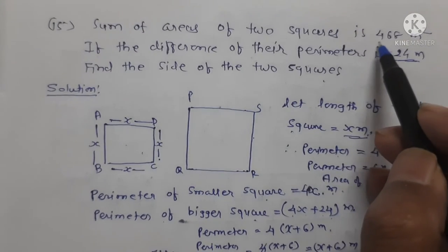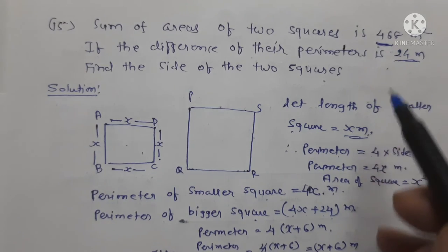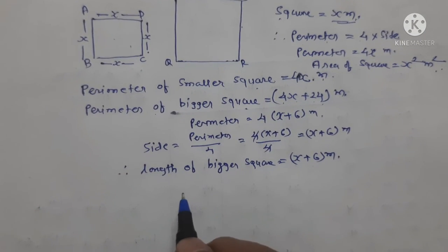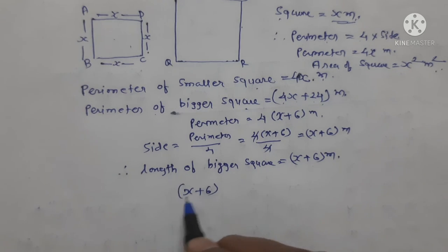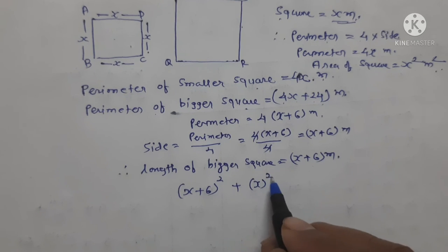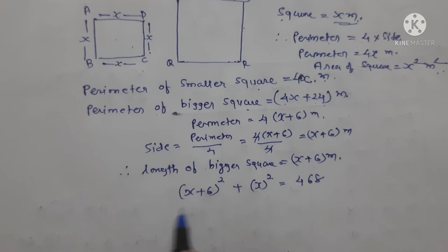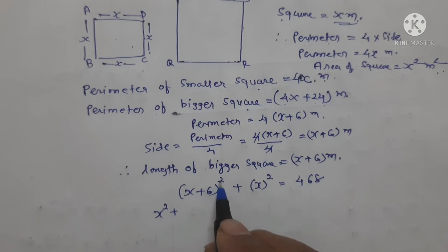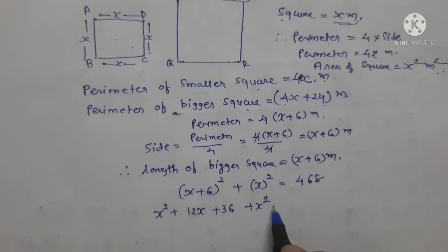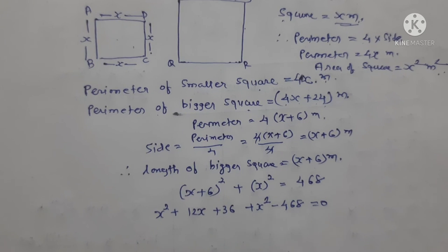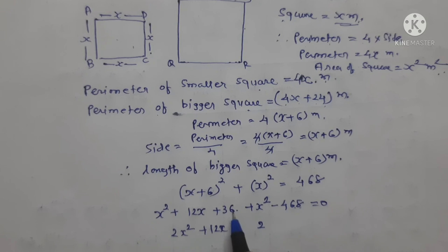It is given that the sum of areas of the two squares is 468 square meters. So (x plus 6) squared plus x squared equals 468. Expanding: x squared plus 12x plus 36 plus x squared minus 468 equals 0. Therefore 2x squared plus 12x minus 432 equals 0. Taking 2 as common: x squared plus 6x minus 216 equals 0.